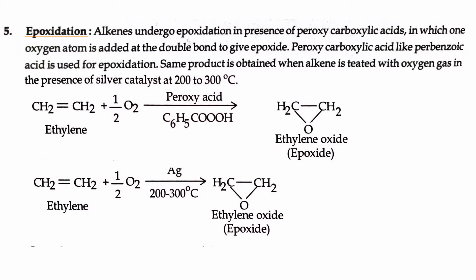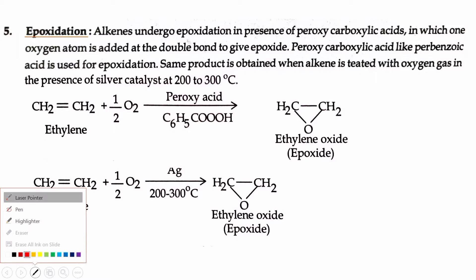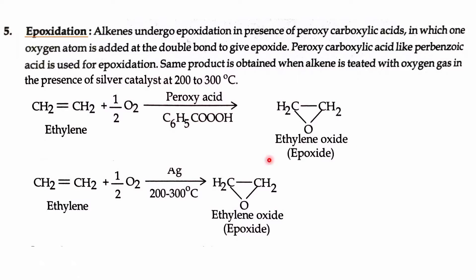Today our topic is epoxidation. Alkenes undergo epoxidation in the presence of peroxycarboxylic acid. In peroxycarboxylic acid, an oxygen atom gets added to the double bond to give an epoxide. An epoxide means one oxygen is added to two carbons, forming a triangular structure.